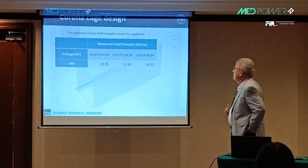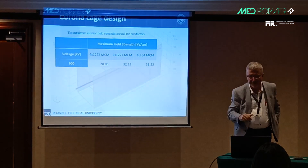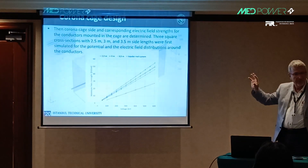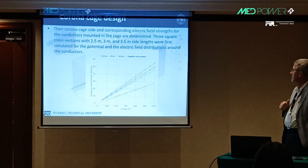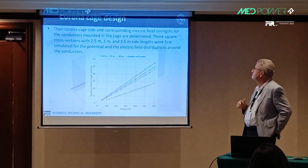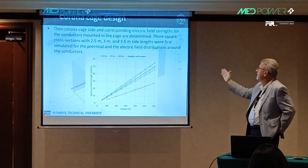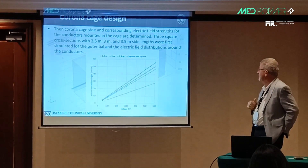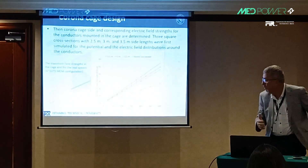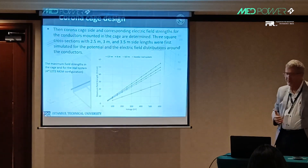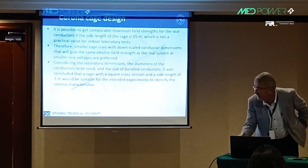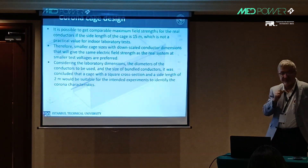We want to keep those field strengths under specific values. At 100 kV of test voltage, the values of maximum field strength are reported here. So we want to design a corona cage whose values will be more or less the same at decreased voltage levels. From this figure, we can understand that it was impossible to obtain identical conditions with a cage less than 15 meters of side length, and that is why we need to use scaled conductors.